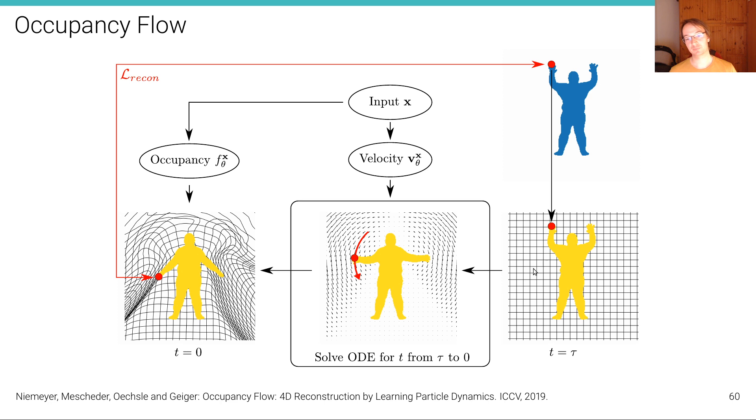And we can then obtain the trajectory by solving an ordinary differential equation, and we can backpropagate through this ODE in order to update the gradients of the occupancy and velocity field in order to model 4D or to learn 4D reconstruction.